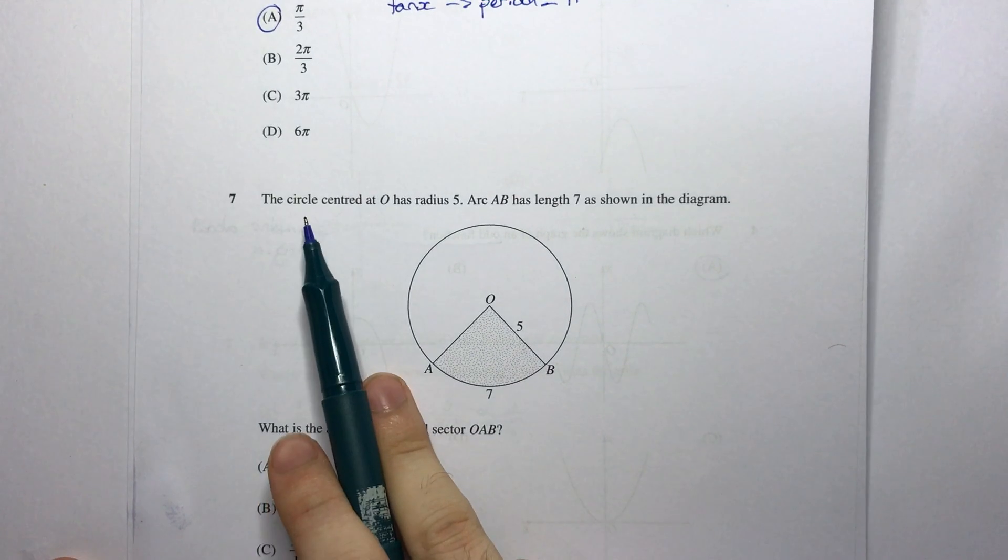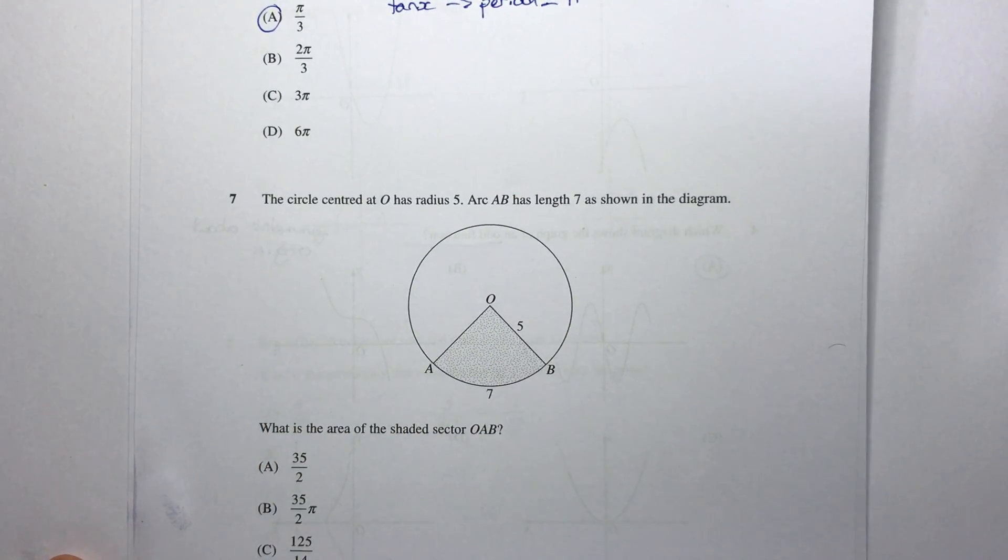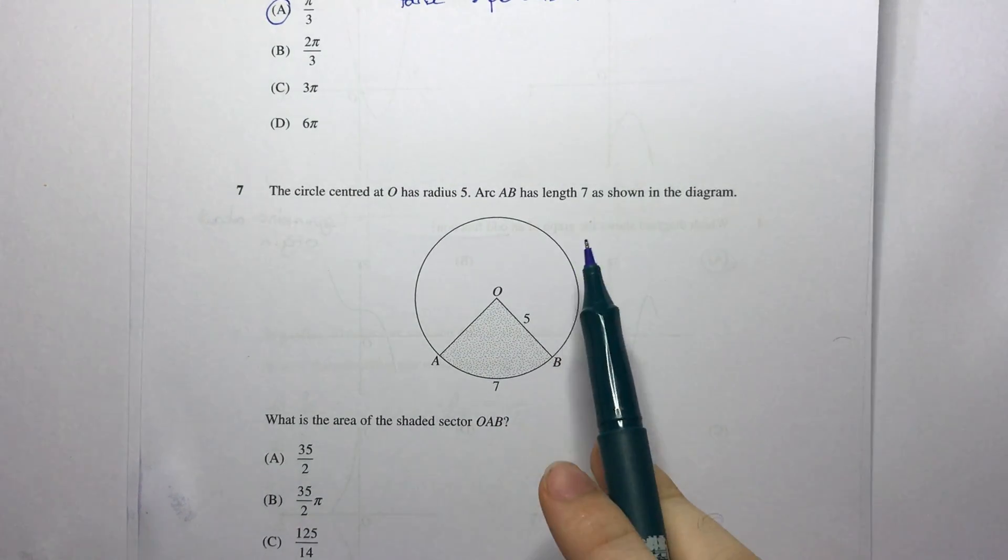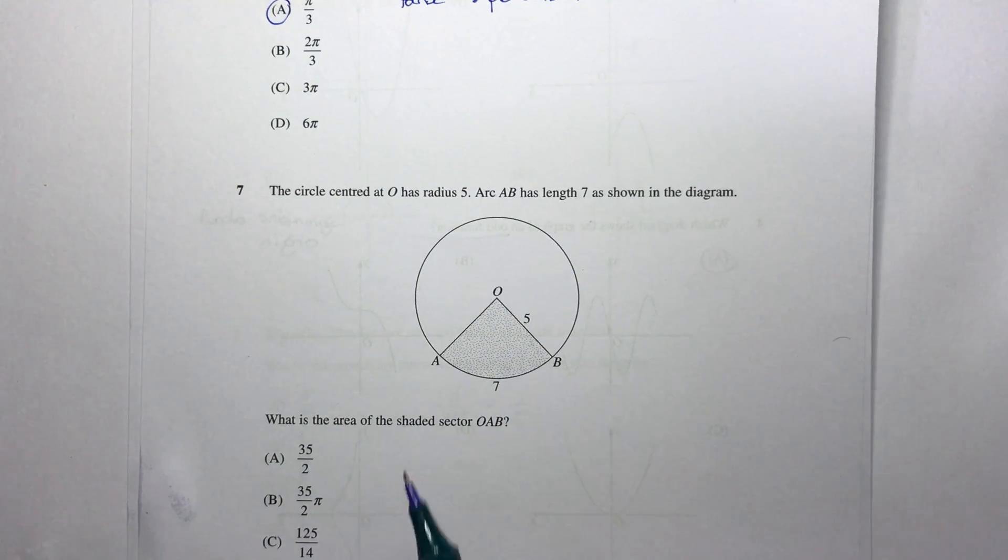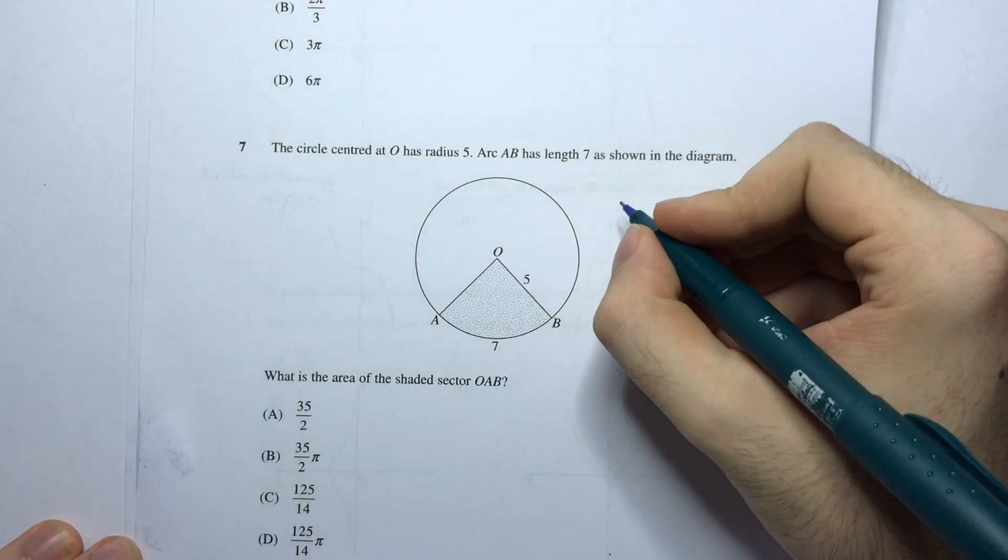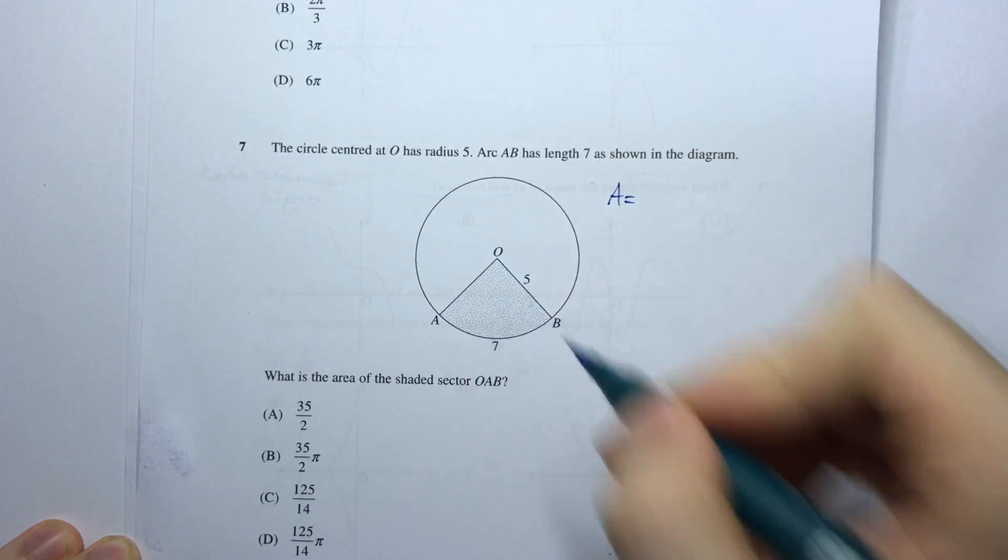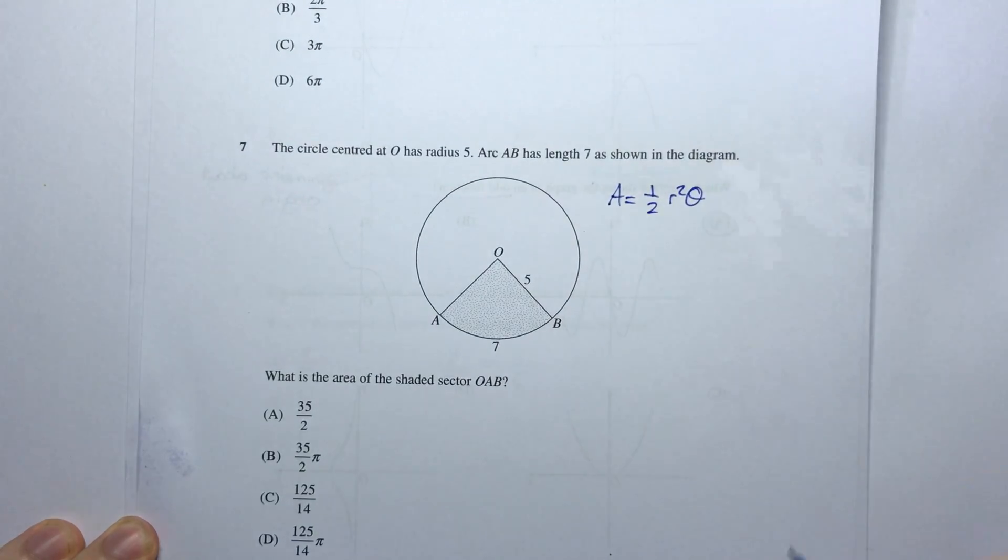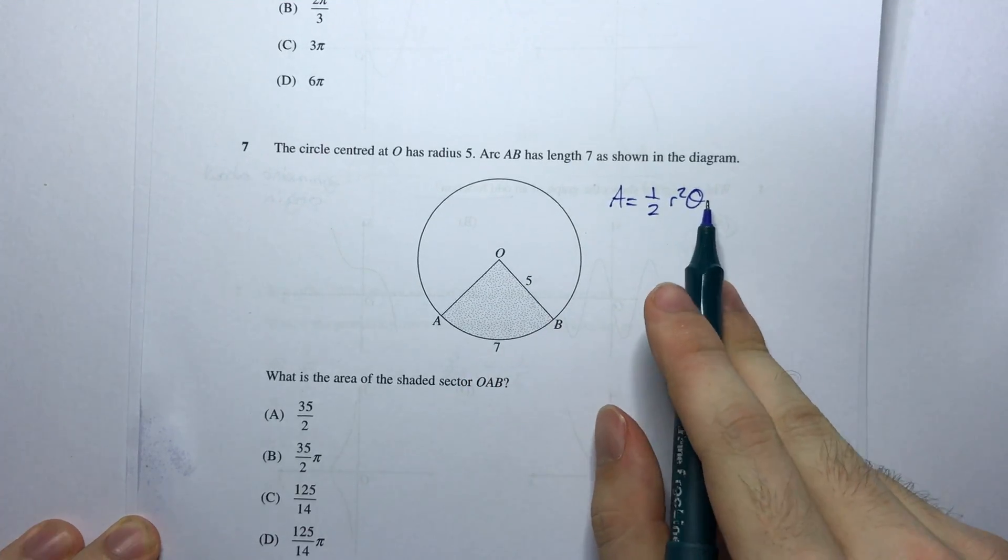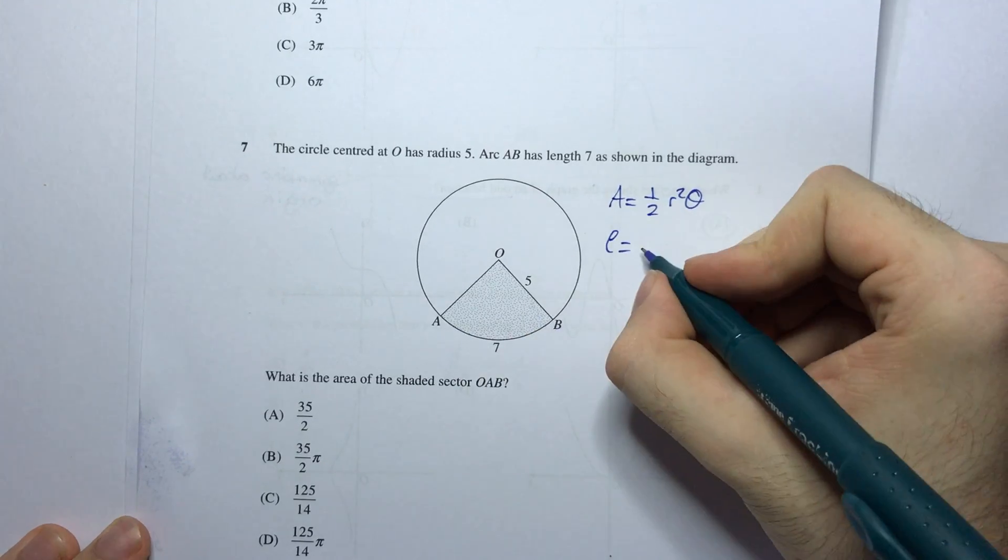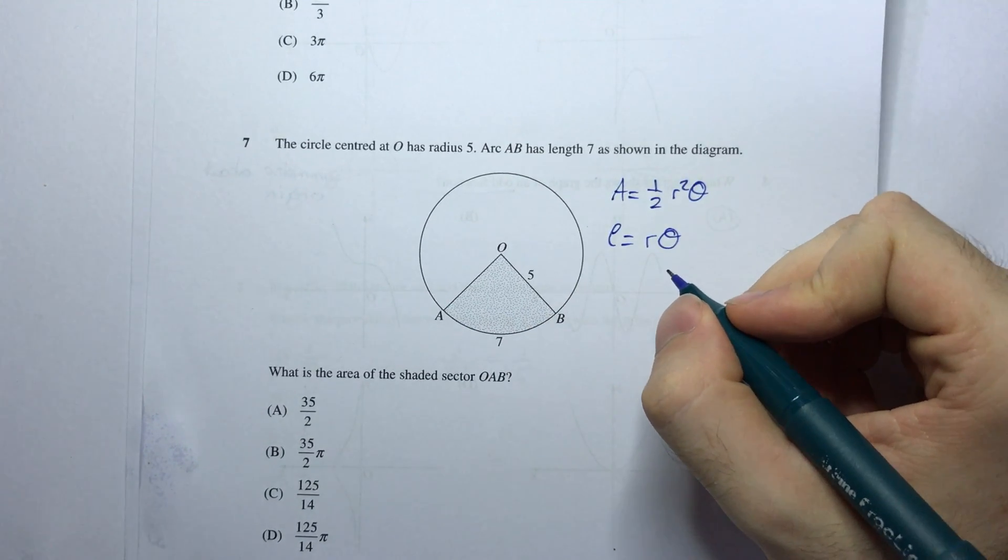Question 7: The circle centered at O the origin has a radius 5. Arc AB has a length 7 as shown in the diagram. What is the area of the shaded sector OAB? So I know there are two formulas that I will need to use. I know that the area of a sector is going to be a half r squared theta. Now I have my r, that's 5, but I don't have my theta. How can I work that out? Well I know another formula that says that the length of an arc is equal to the radius times the angle which it subtends.